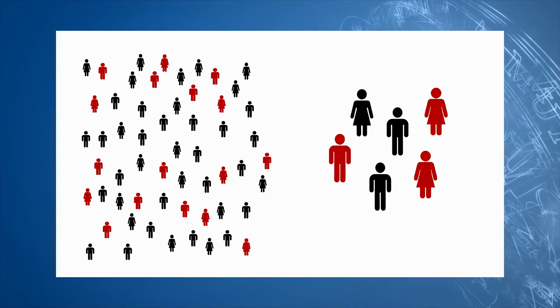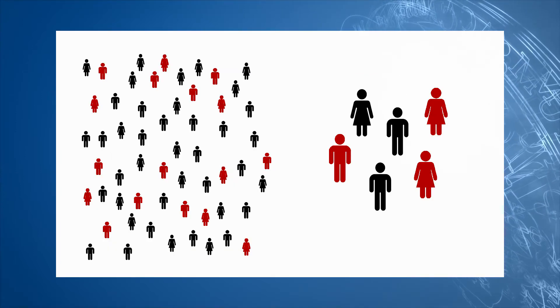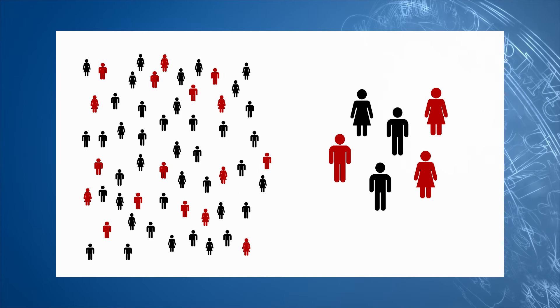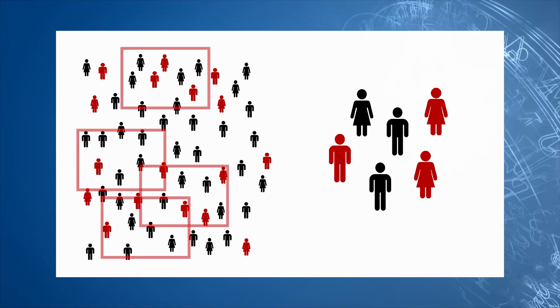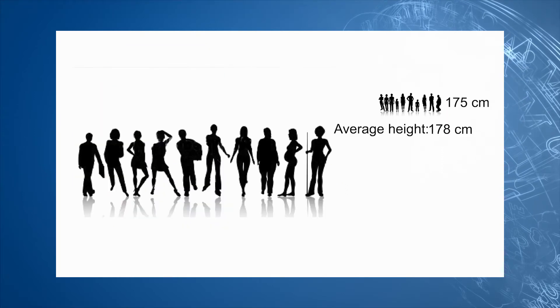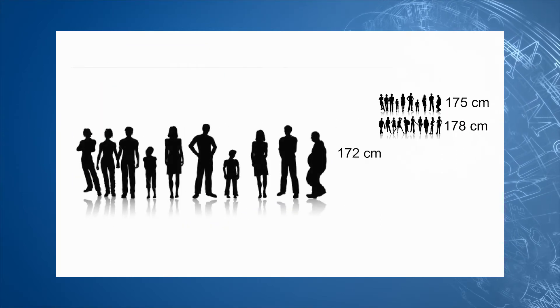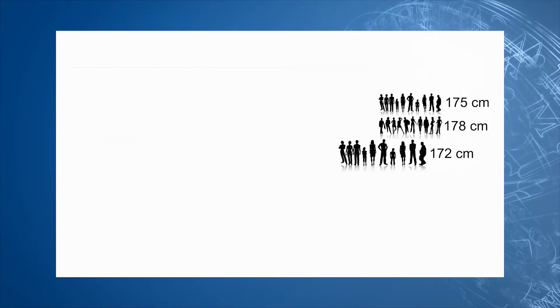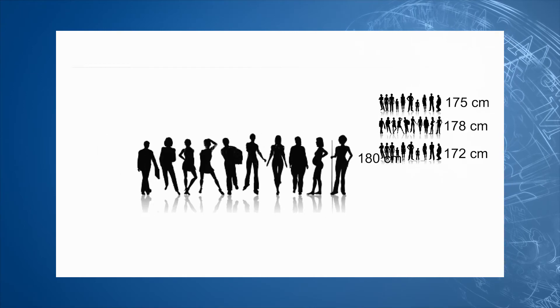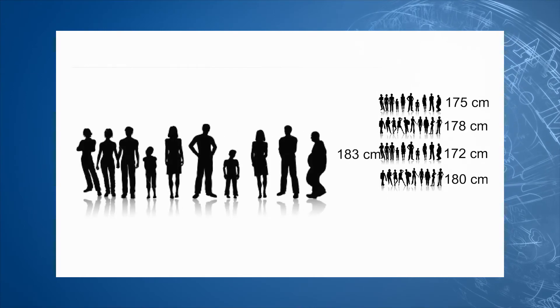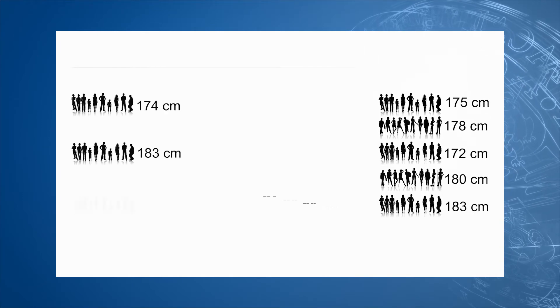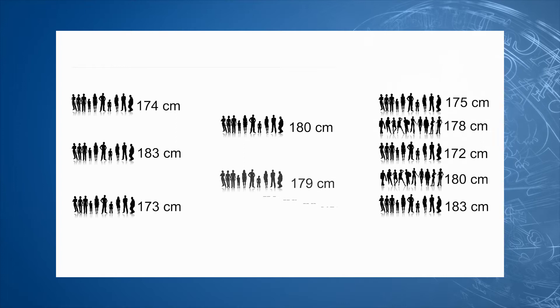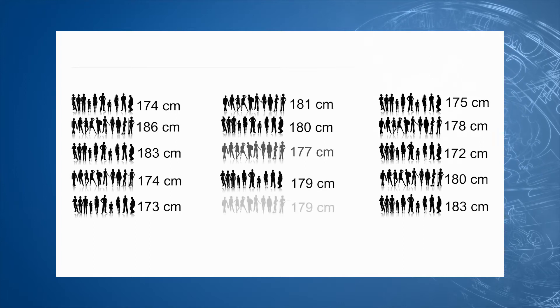What statistical tools like the confidence interval and the p-value do, is they imagine many repetitions of your study. And then they express how much variability can be expected based on pure chance. Only after you know this background sampling variability, you can start thinking about how striking the results from your single study really are. This way of reasoning underlies all statistical tests.